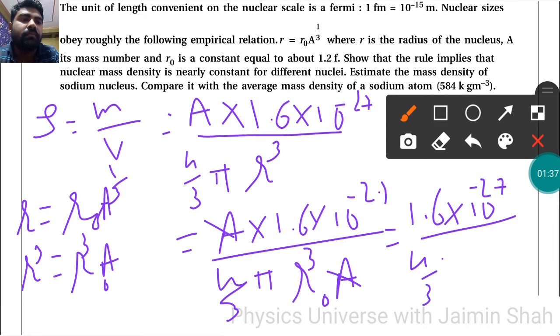r₀ is given as 1.2 × 10^-15. So r₀³ is there, I have to write the cube of that. By calculating all the terms we will get density.